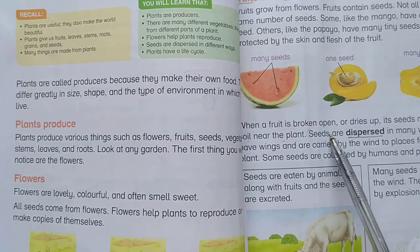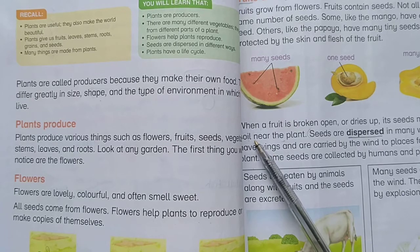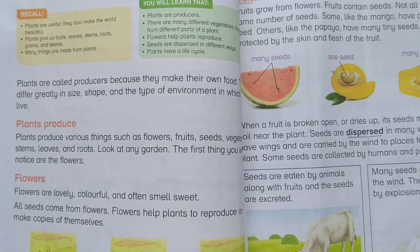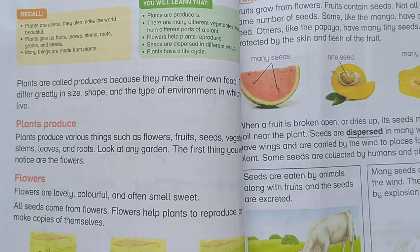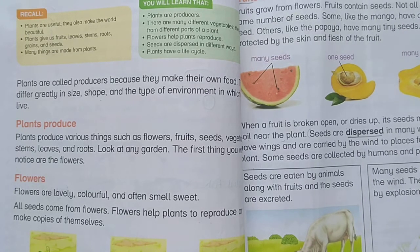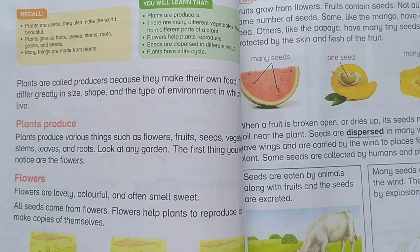When a fruit is broken, it opens and dries up, and its seeds may fall into the soil near the plant. Seeds are dispersed in many ways.